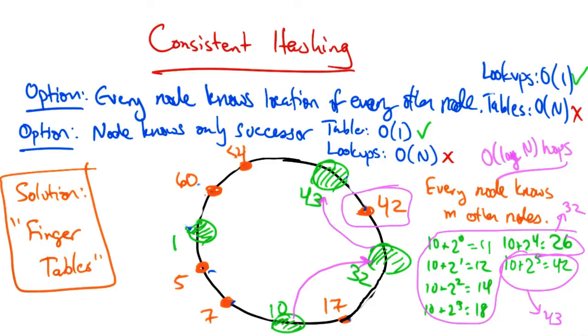Due to the structure of the finger table, these lookups require order of log n hops. This results in efficient lookups, order log n messages per lookup, and the size of the finger table is order of log n state per node.